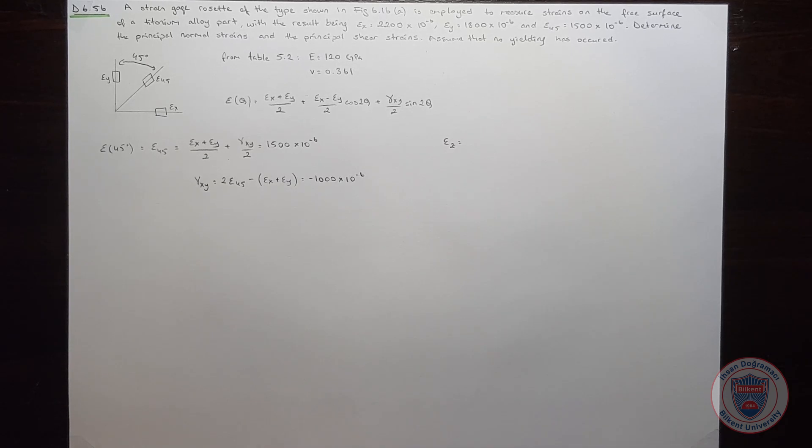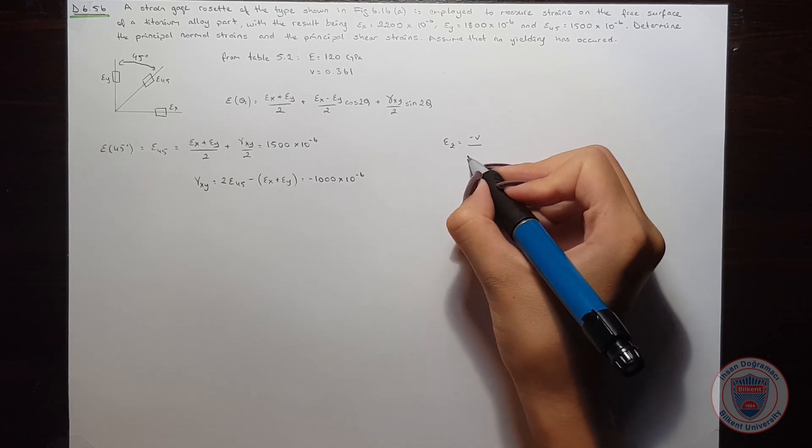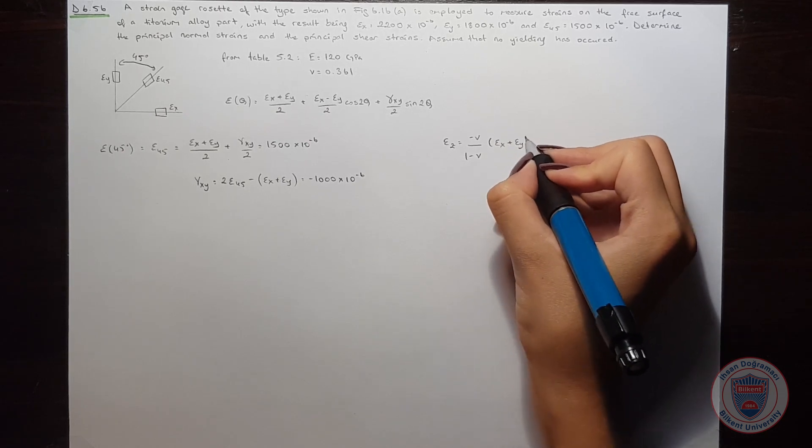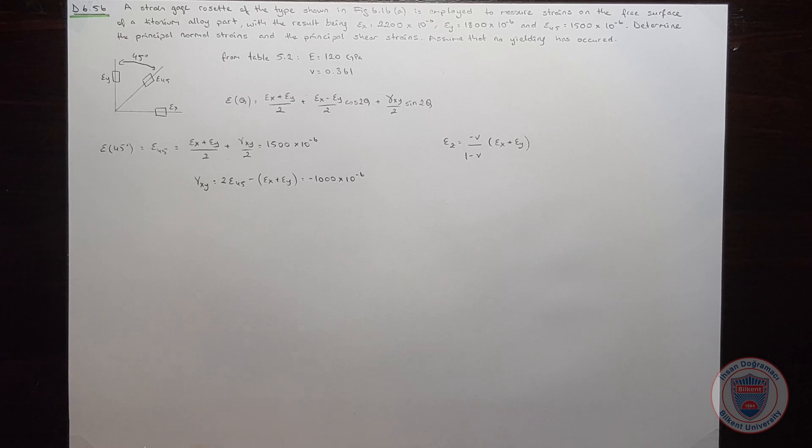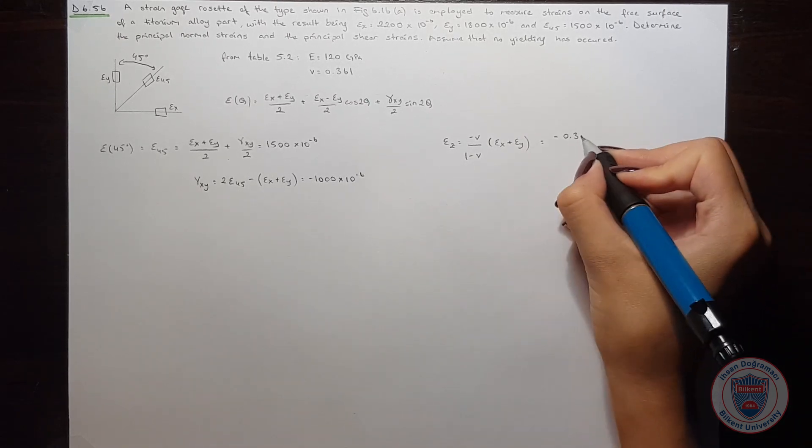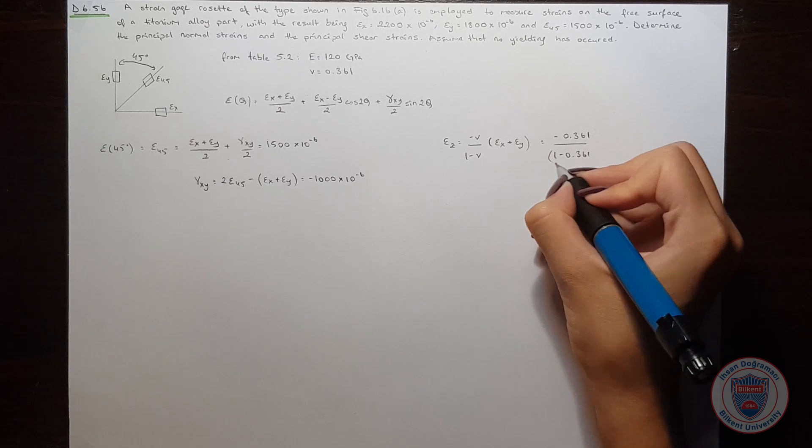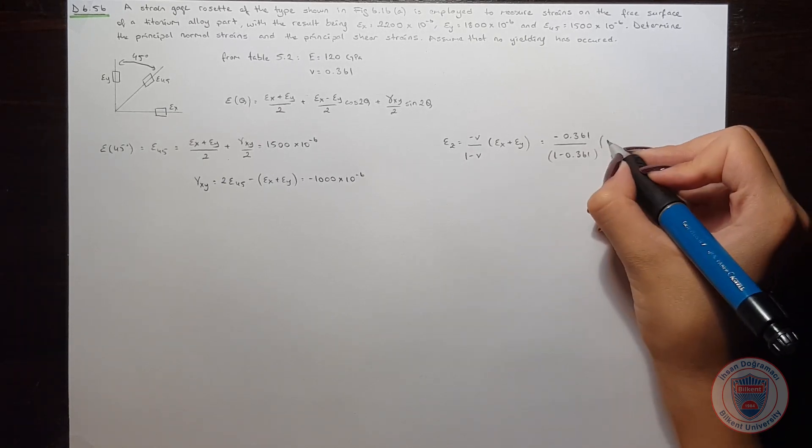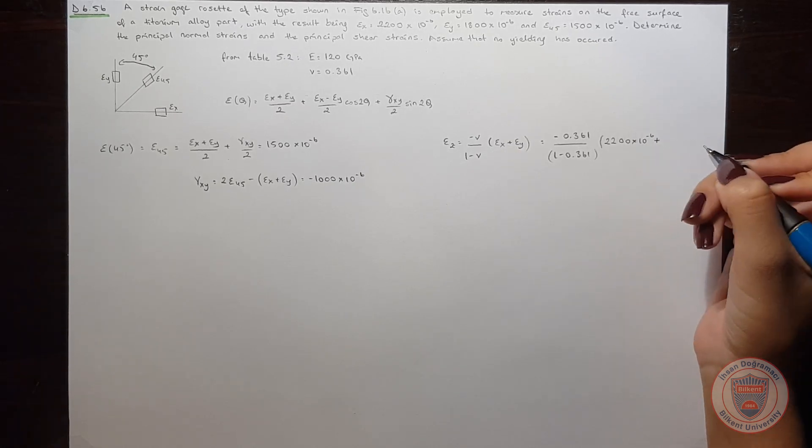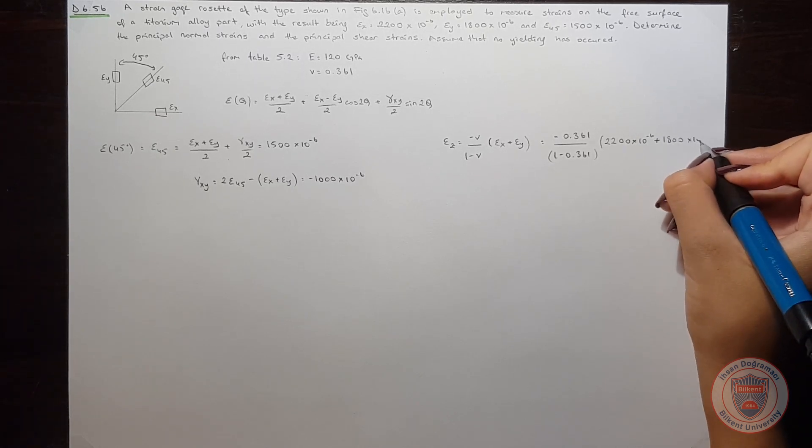Since there is no yielding, epsilon z will be equal to minus Poisson's ratio over 1 minus Poisson's ratio times epsilon x plus epsilon y. And it is minus 0.361 over 1 minus 0.361 times 2200 times 10 to the power of minus 6 plus 1800 times 10 to the power of minus 6.